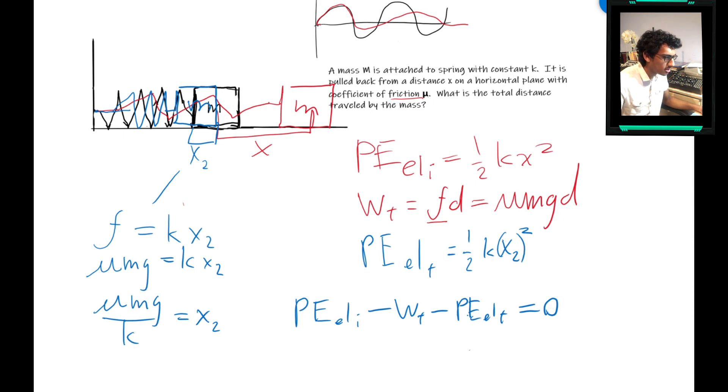So the friction force, or we'll do it in terms of the distance. So mu m g d equals one half k, we can combine or take out the common term. And then write it out: x squared minus mu m g over k quantity squared.